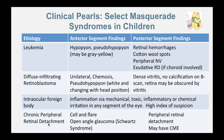Clinical pearls for select masquerade syndromes in children — there's an extended list in the handout. Look very closely at the hypopyon: for leukemia, it may be gray-yellow, and there are usually posterior segment findings. The most serious thing to consider is diffuse infiltrating retinoblastoma, where there is usually a pseudo-hypopyon that is white and changes with head position. If you have a child with a hypopyon, see if it changes with head position. A dense vitritis with no calcifications on scan and poor view of the retina requires a high index of suspicion — make a referral sooner rather than later.